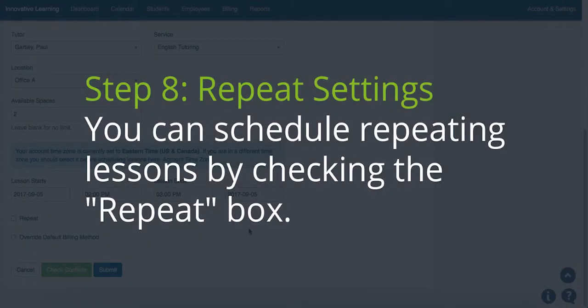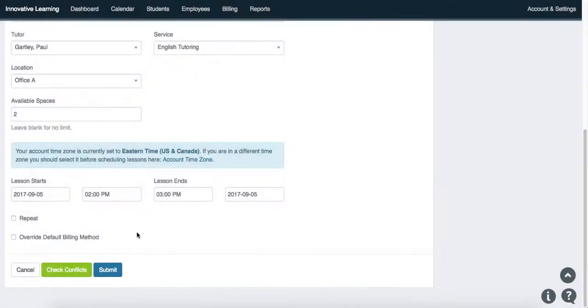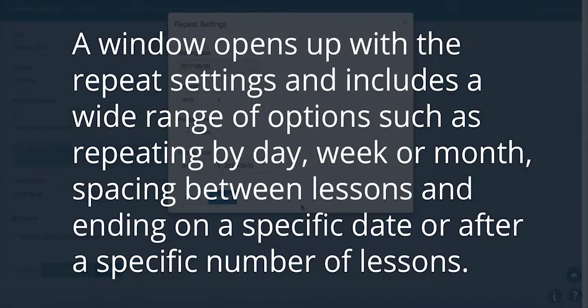Step 8: Repeat Settings. You can schedule repeating lessons by simply checking the repeat box. A window opens up with the repeat settings and includes a wide range of options such as repeating by day, week, or month, spacing between lessons, and ending on a specific date or after a specific number of lessons.